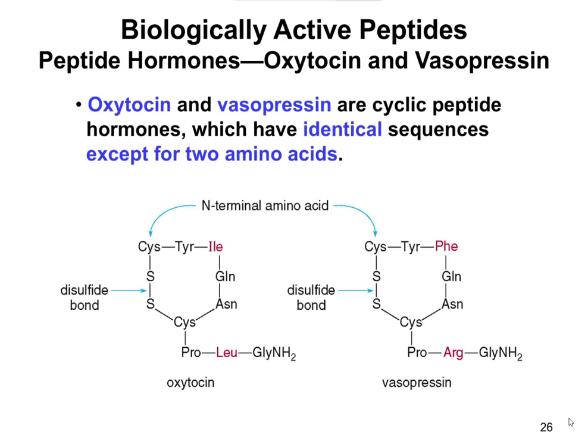A couple of other naturally occurring peptides are oxytocin and vasopressin. These are cyclic peptide hormones — a hormone is something that's made in one organ, released, travels through the bloodstream, and has an effect somewhere else. They have very similar sequences to each other, with the exception of two different amino acids. They form a ring, and this is going to be the first time we actually see a disulfide bond.